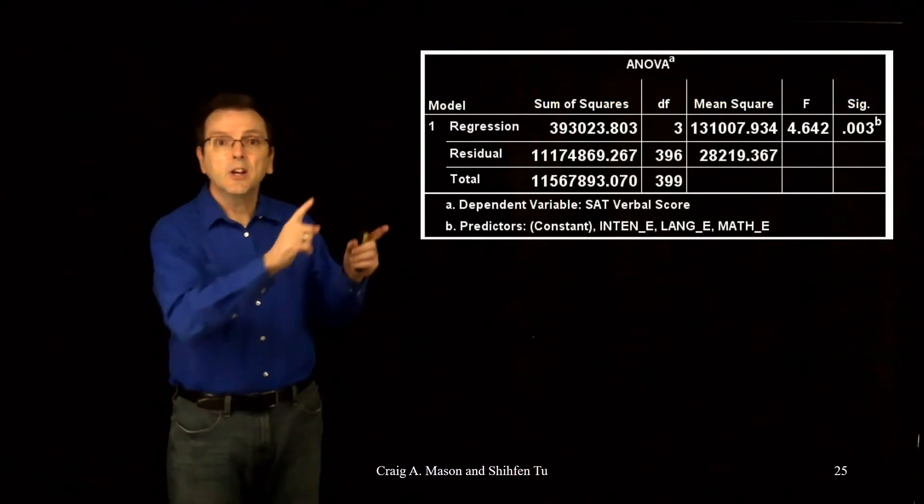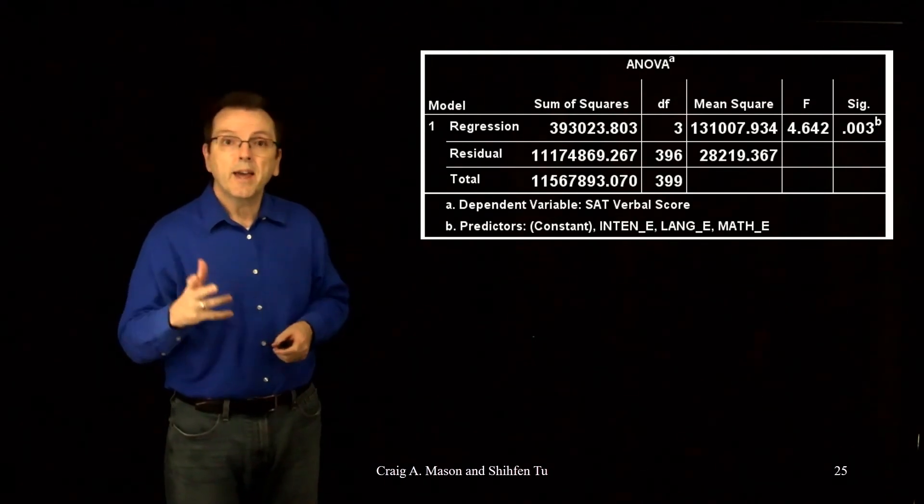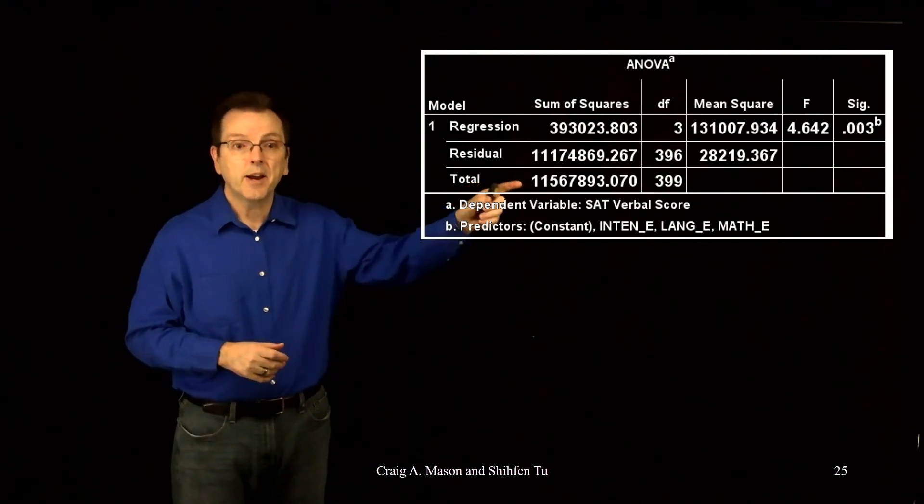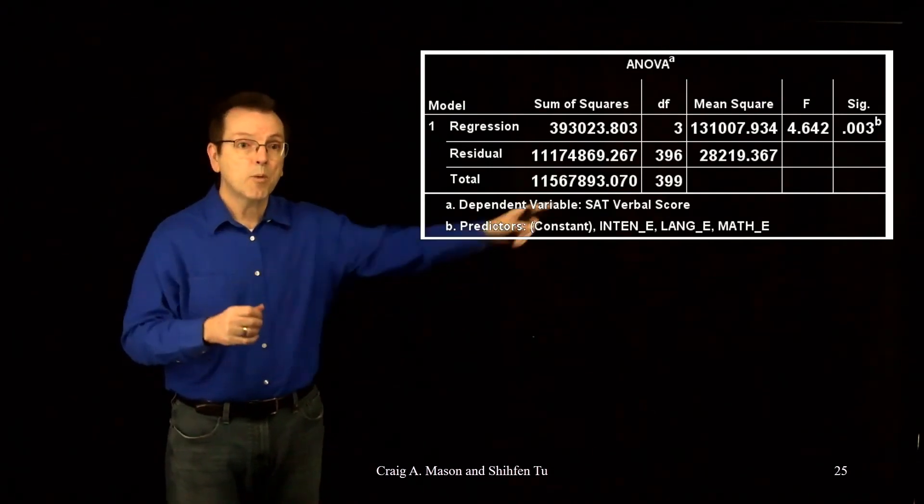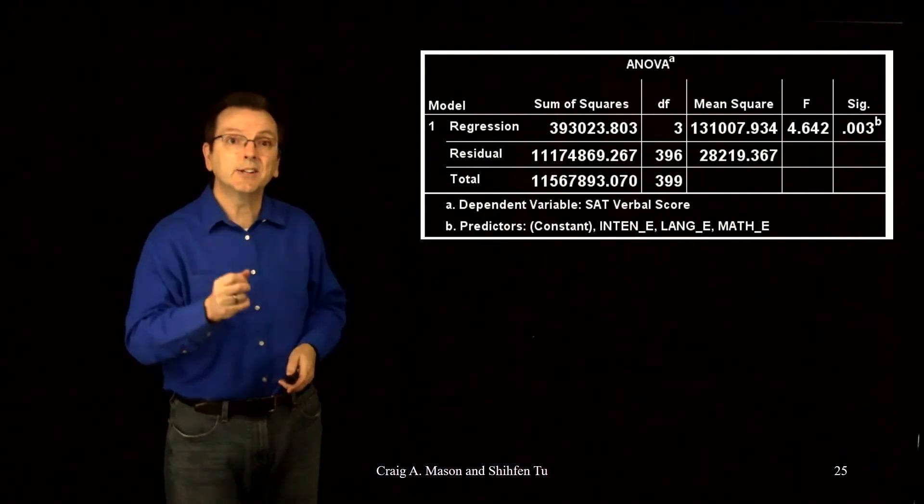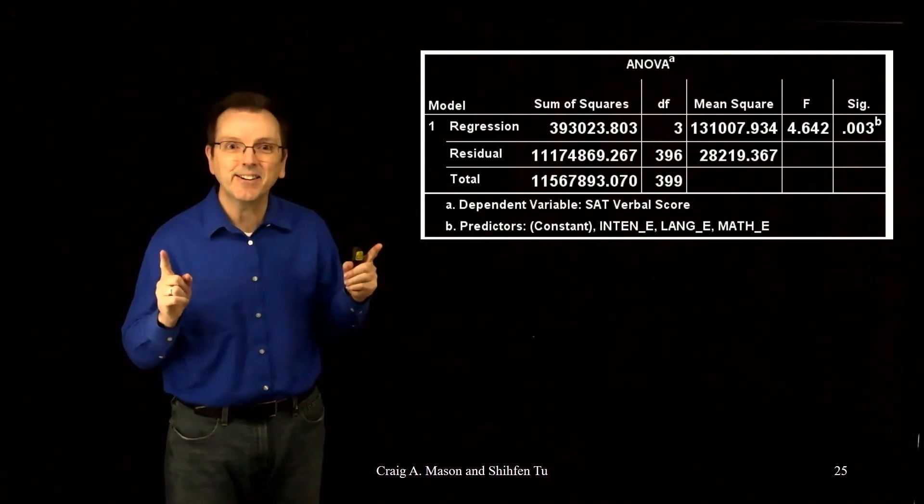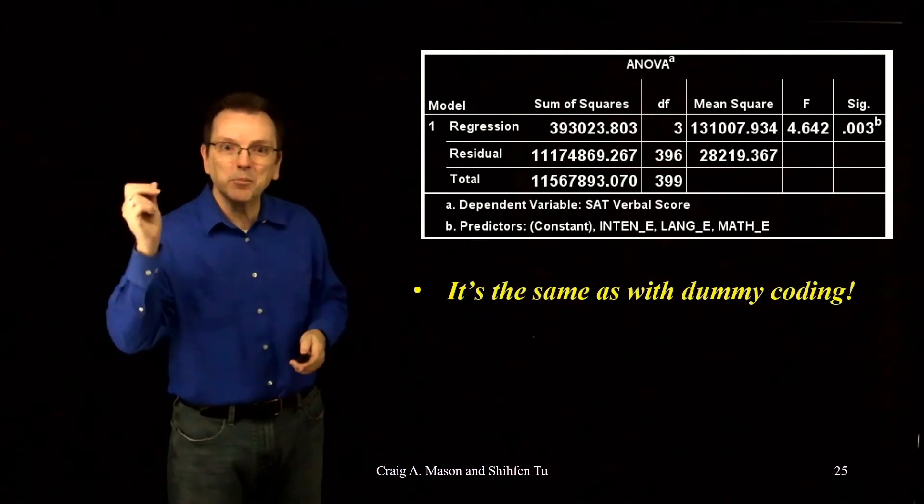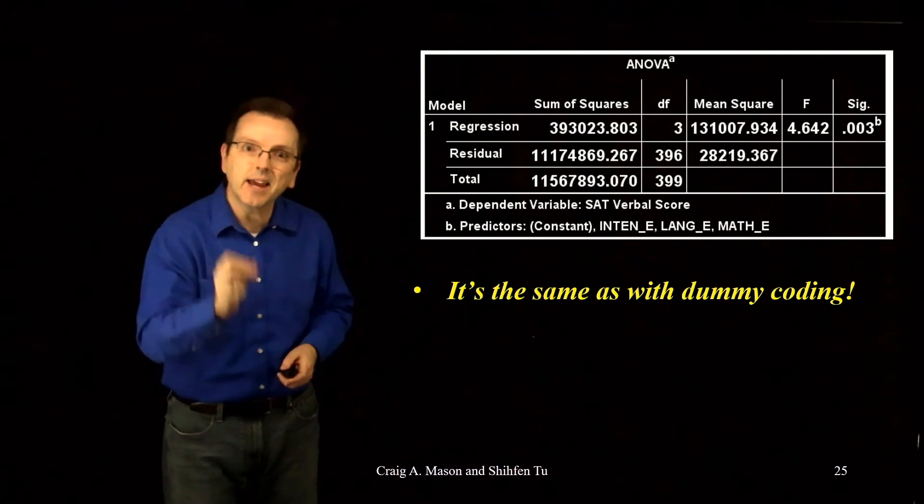First, let's look at the ANOVA table in our regression output. We get an F with 3 and 396 degrees of freedom equal to 4.642 and a p-value of .003. If that sounds familiar, it's exactly the same result as dummy coding. F is exactly the same as it was before.